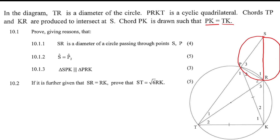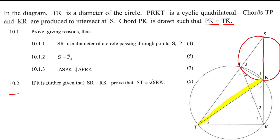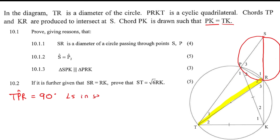What we already know is that TR is a diameter in this circle. So if we consider the angle over here, then we know that this whole angle P1 and P2, which we'll call angle TPR, must be 90 degrees because of angles in a semicircle.